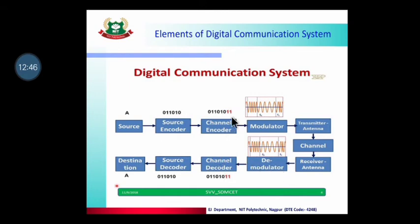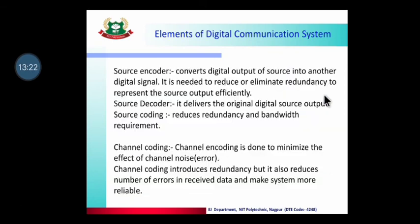At the receiver end, the demodulator removes the high frequency carrier added by the transmitter to recover the original information. Then the channel decoder removes the extra redundant bits added by the channel encoder. Then the source decoder does exactly the opposite of the source encoder — removing the additional encoding — so the original information reaches the destination unchanged.